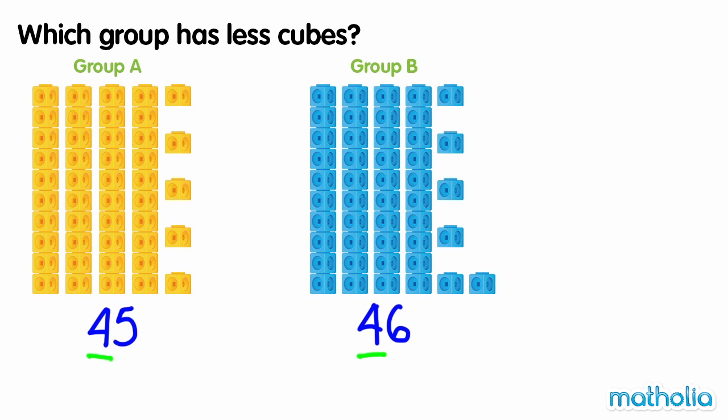So we move on to compare the digits in the ones place. Group A has five ones. Group B has six ones. Five ones is less than six ones. So forty-five is less than forty-six. Group A has less cubes.